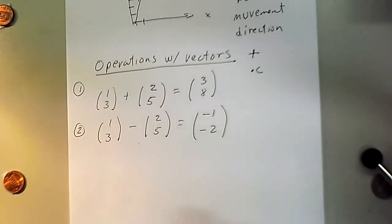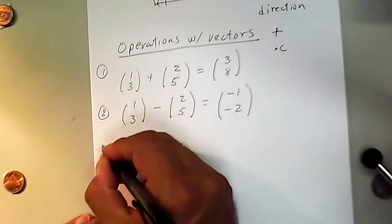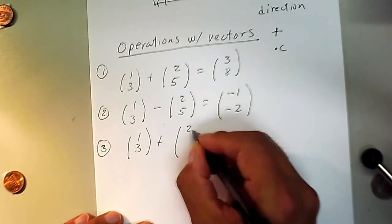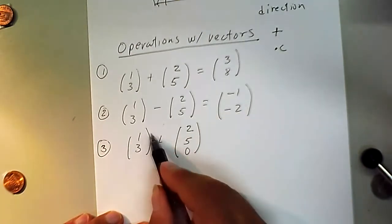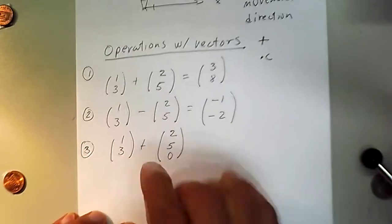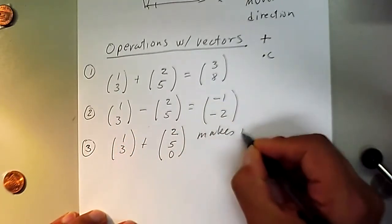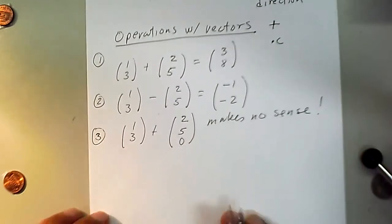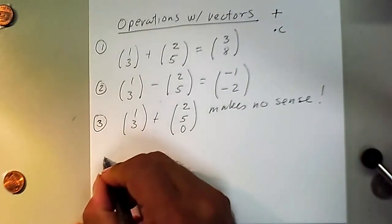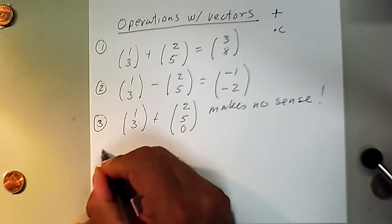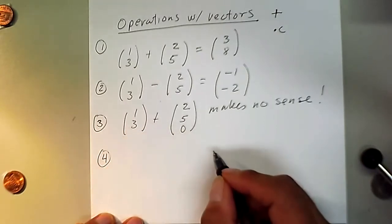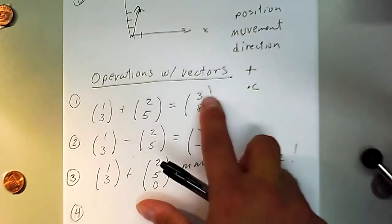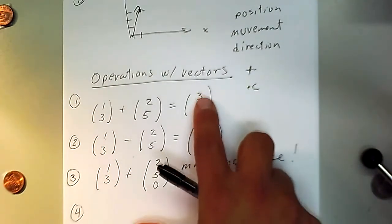If you try to add a two-dimensional vector to a three-dimensional one — even if you just write (2, 5, 0) — that kind of thing makes no sense. Don't try to do that. The other thing we can do is multiply vectors with scalars. A scalar is just a number, the same kind of number as the elements the vector is made of — in our case, real numbers.